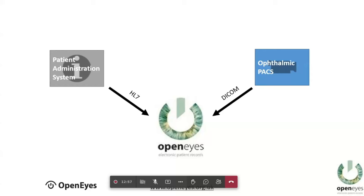You can configure what you want sent into OpenEyes — for example, OCT reports can be sent in while keeping the full OCT scan in its own software, which is usually the desirable approach. As a clinician, nearly all your time is spent using OpenEyes. You don't have to look at the other systems because all appointments, patient information, and investigation reports are sent into OpenEyes depending on how you want it set up.